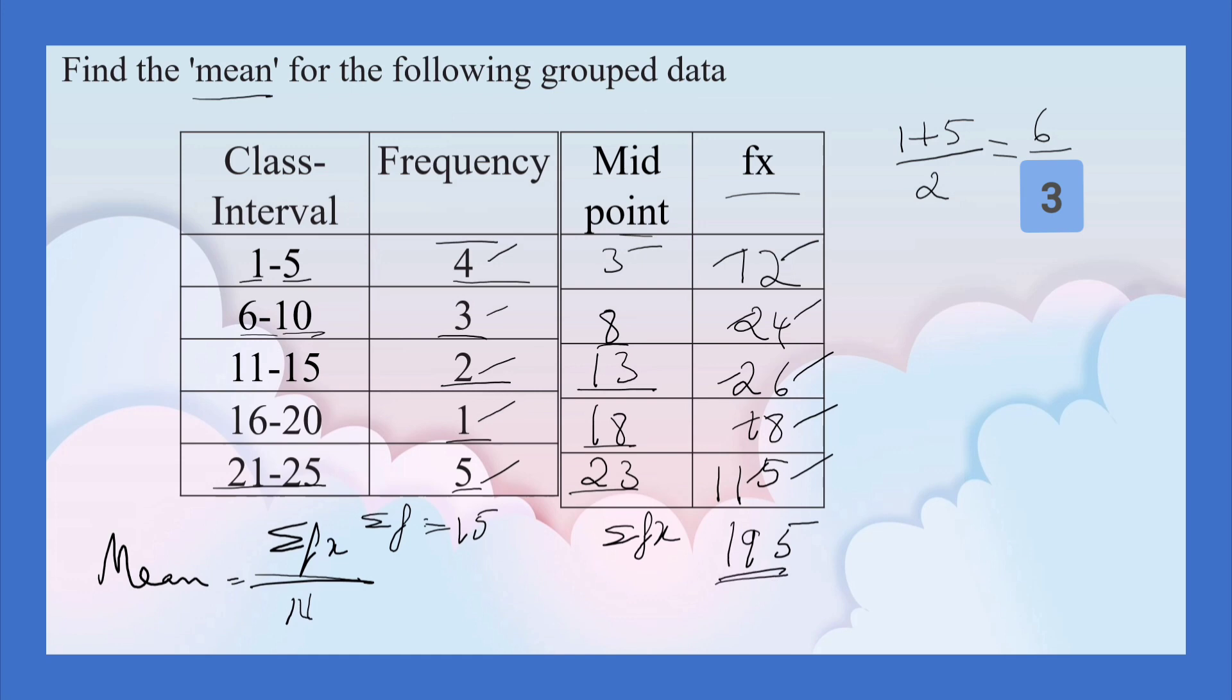So we can find mean by using the formula, 195 divided by 15. 15 1s are 15. Carry 4. 45. 15 3s are 45. So mean is equal to 13.